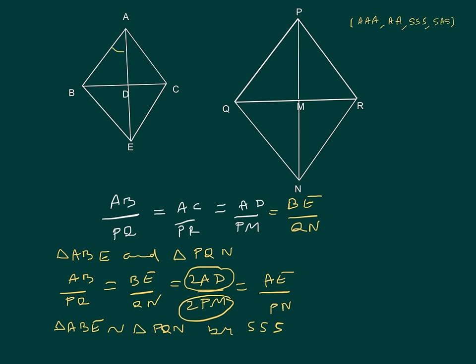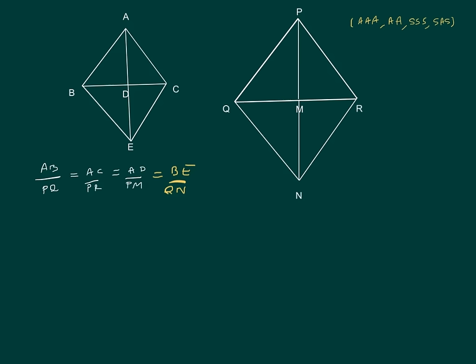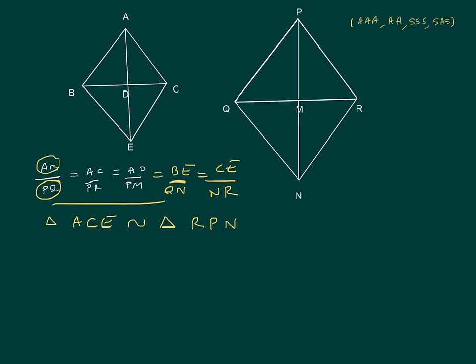This implies that angle BAE is equal to angle QPN. Using the same ratios, by replacing AB and PQ we get AB = CE and PQ = NR. We can prove triangle ACE similar to triangle RPN by SSS, and therefore angle CAE is equal to angle RPN.